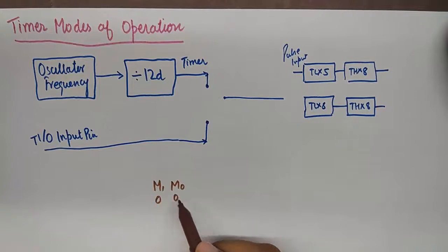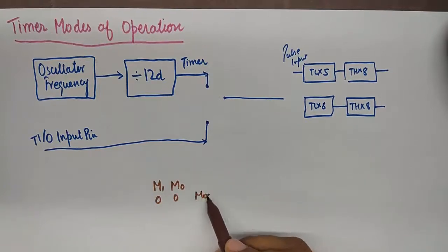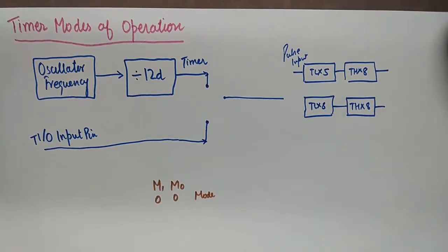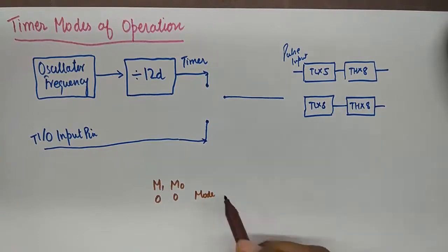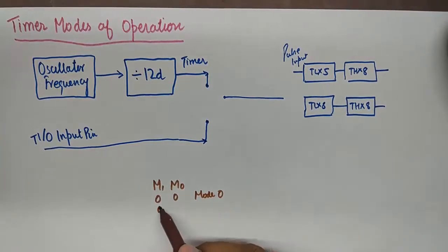Placing a 00 will put this timer in mode 0. 01 will put this timer in mode 1. 10 will put this timer counter in mode 2, and 11 will put this timer and counter in mode 3.